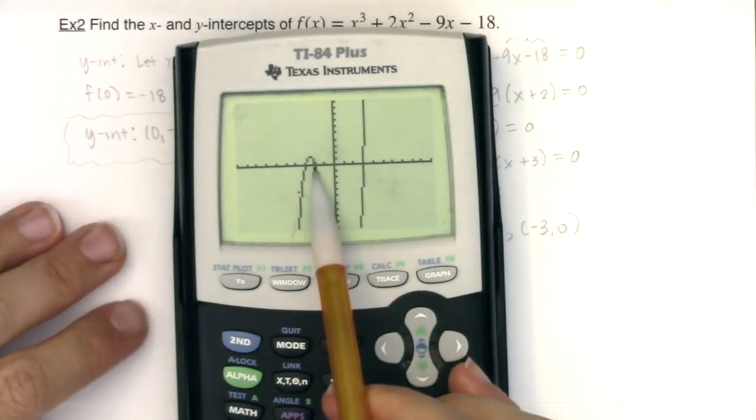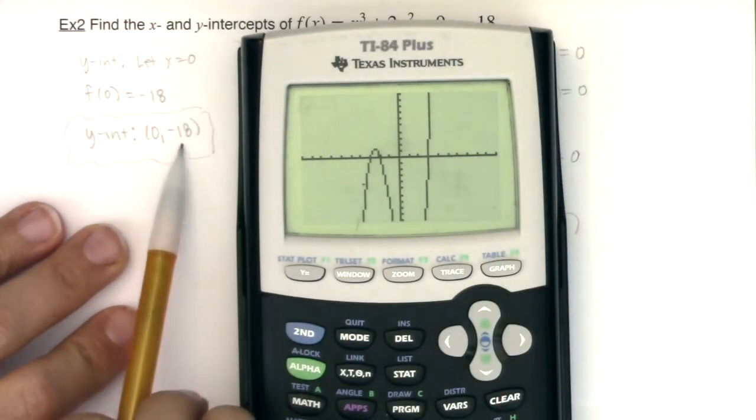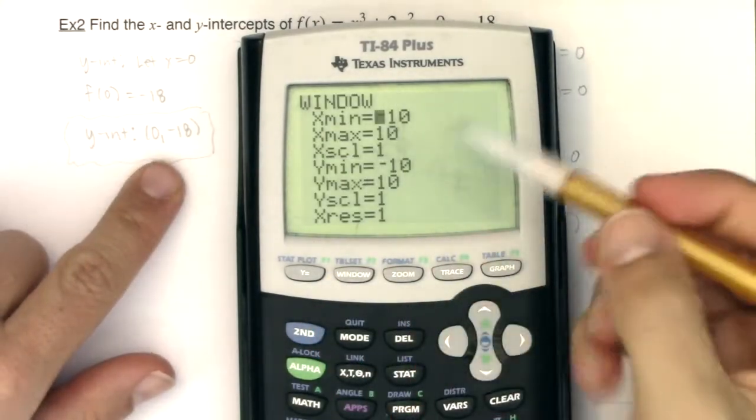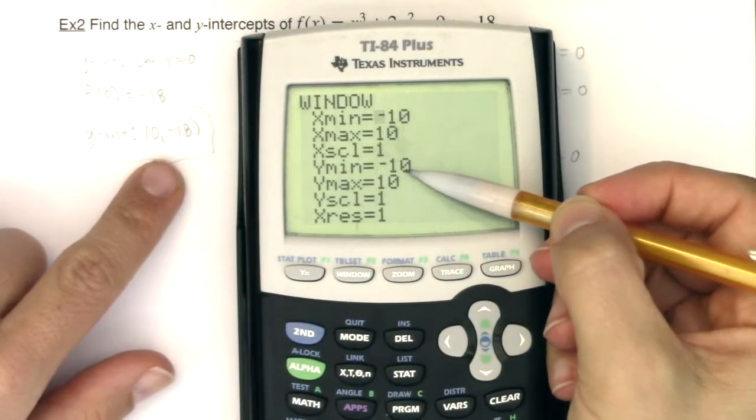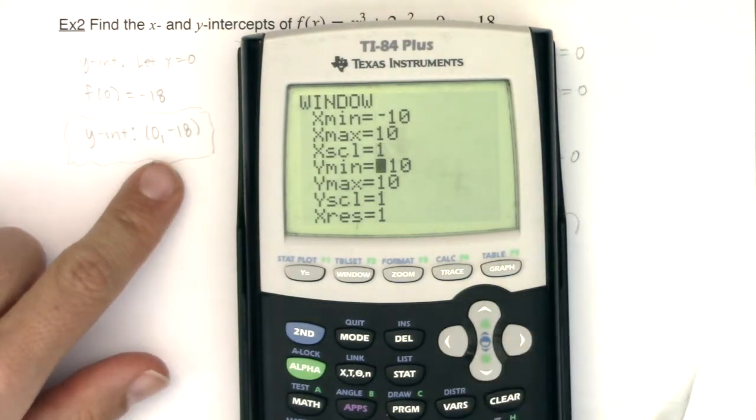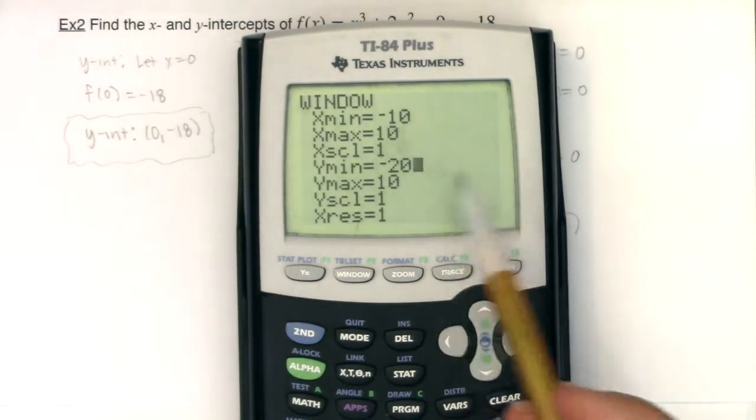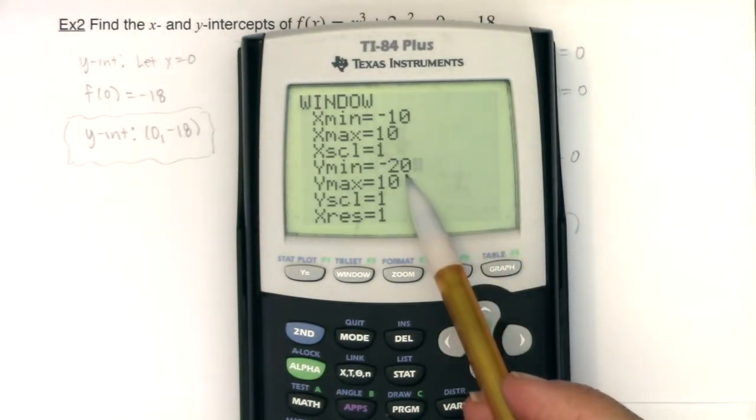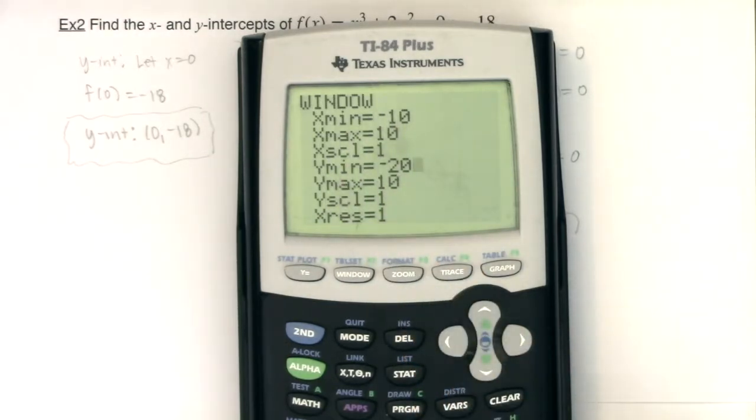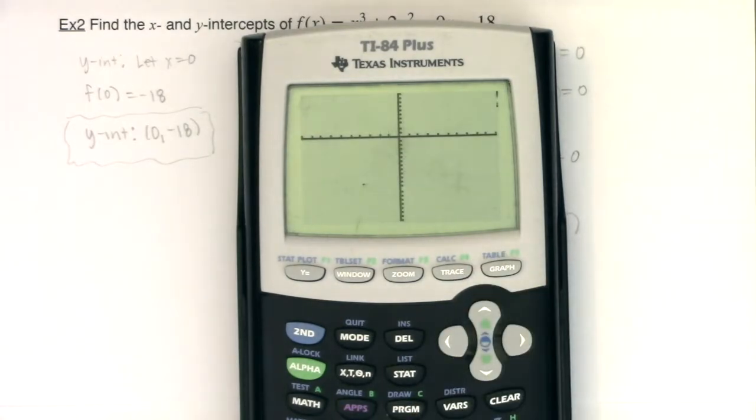And I do, I see one at -3, -2, and 3. I can't quite see this y intercept at -18 because if you look at the y minimum, it only goes down to -10. That's the zoom 6 default window. If I actually wanted to see this, I could just lower this to any number smaller than -18. I'm going to opt for -20. And keep in mind whenever you adjust your window, don't hit zoom 6 again. It'll just reset this back to -10. Hit graph.